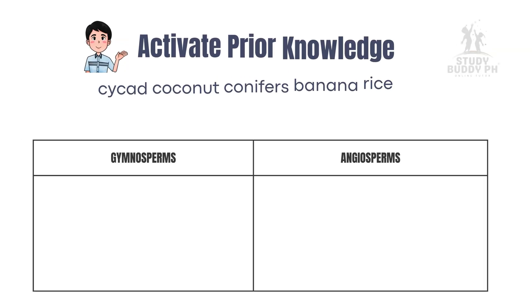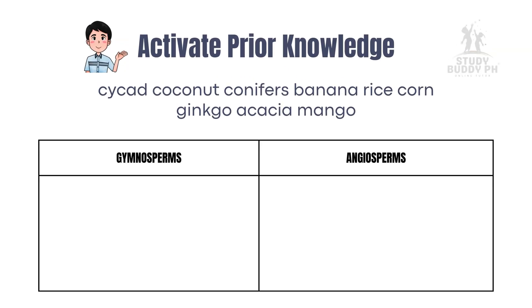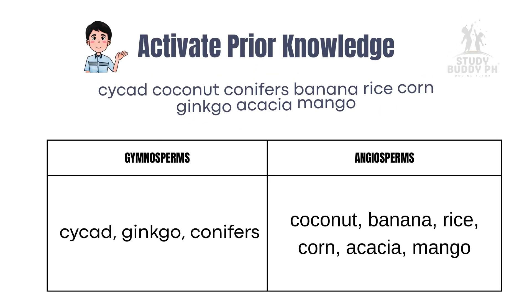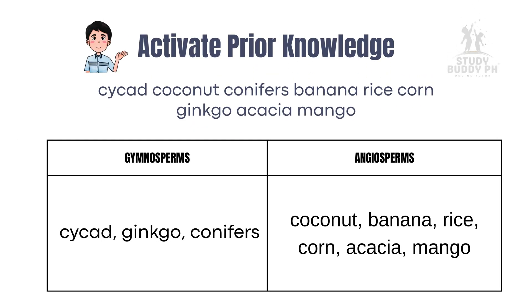Before we explore animals and microbes, let's recall what we know about plants. Which of these words are flowering plants — angiosperms — or non-flowering — gymnosperms? Great job! That warm-up shows how grouping living things helps us make sense of nature.